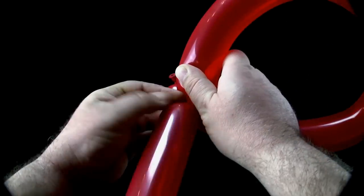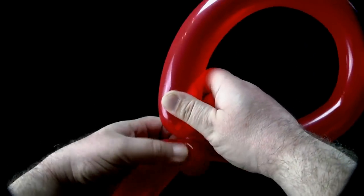Twist the small bubble at the beginning of the loop around the balloon at the other end of the loop.